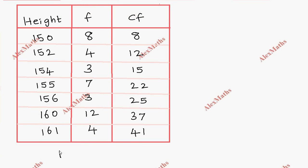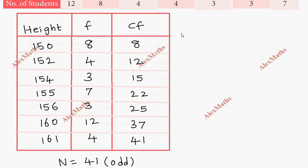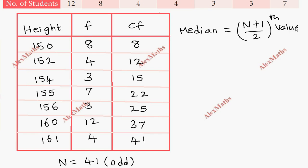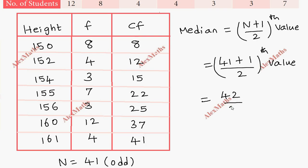The total value n equals 41, which matches the last cumulative frequency value. Since n=41 is an odd number, we use the median formula for ungrouped ordered data: median equals the value at position (n+1)/2. So (41+1)/2 = 42/2 = 21. We need the 21st value.